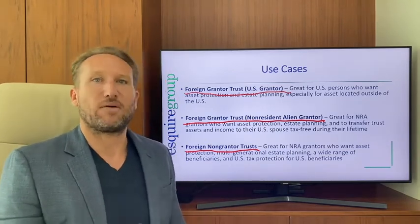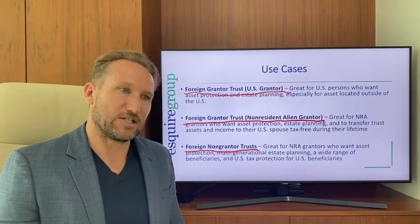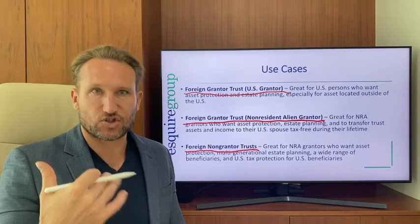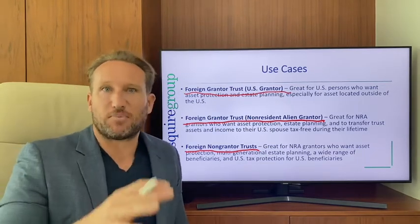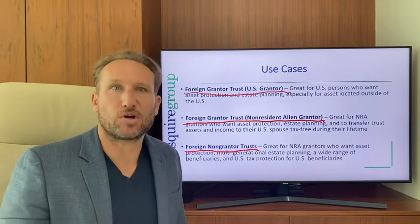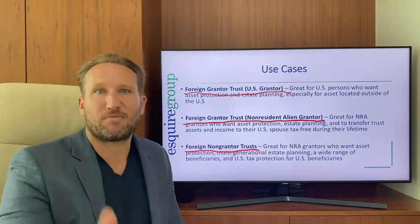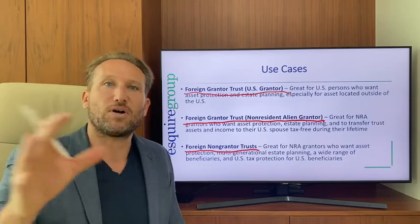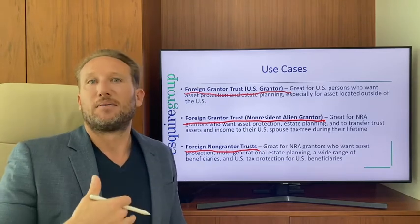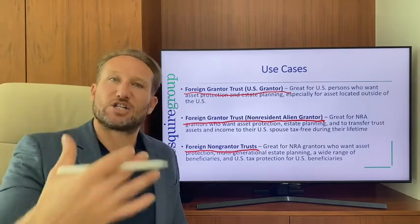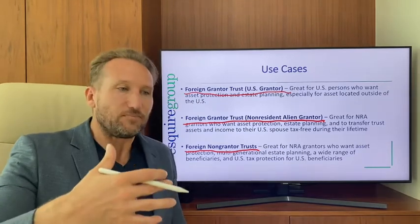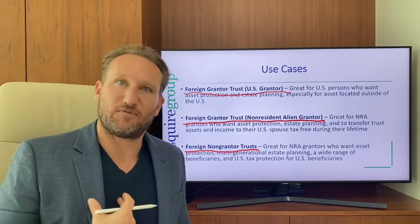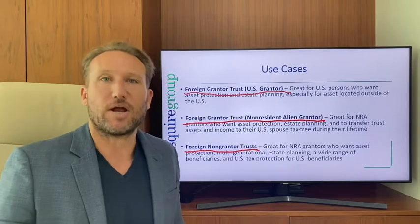A good example is a non-U.S. patriarch of a family whose some children became Americans. He could set up a foreign non-grantor trust naming himself, his spouse, his children, and all bloodline family members descending from him and his wife — generation after generation of beneficiaries.